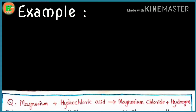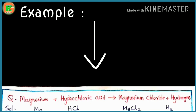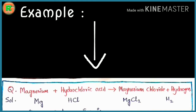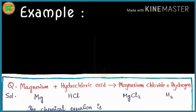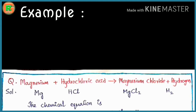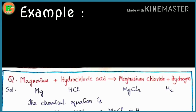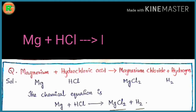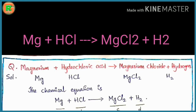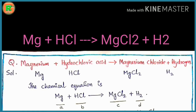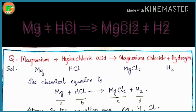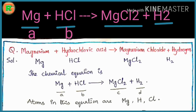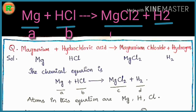Magnesium plus hydrochloric acid gives magnesium chloride plus hydrogen. Writing the chemical formulas: Mg, HCl, MgCl₂, and H₂. The chemical equation is: Mg + HCl → MgCl₂ + H₂. Let us assume these terms as A, B, C, D — Mg as A, HCl as B, MgCl₂ as C, and H₂ as D.